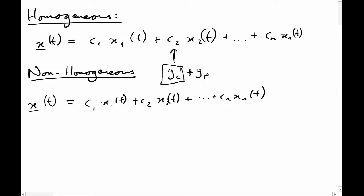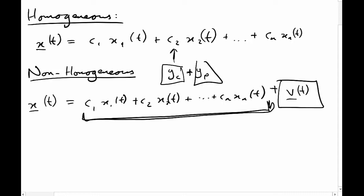The full solution to the non-homogeneous case is that complementary solution — c1·x1(t) + c2·x2(t) + ... + cn·xn(t) — plus some particular solution, which I'll call v(t), a vector. The particular solution v(t) is what we're looking for. Finding the complementary part gets us roughly 90% of the solution; the particular solution v(t) at the end provides the final piece that completes the overall solution.